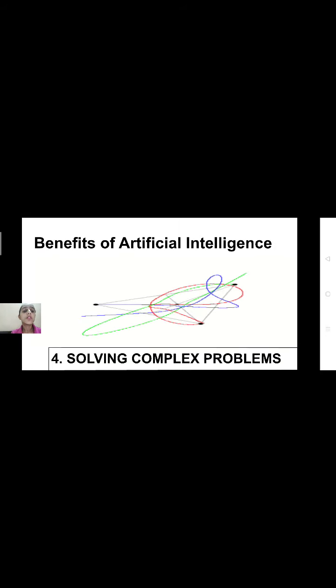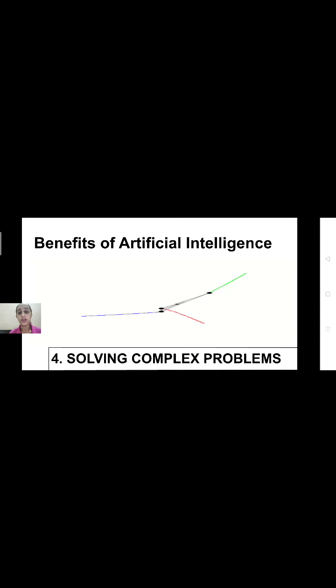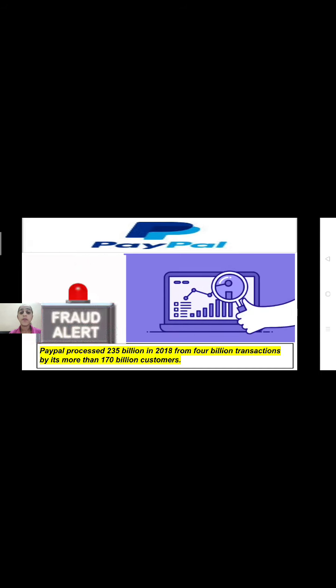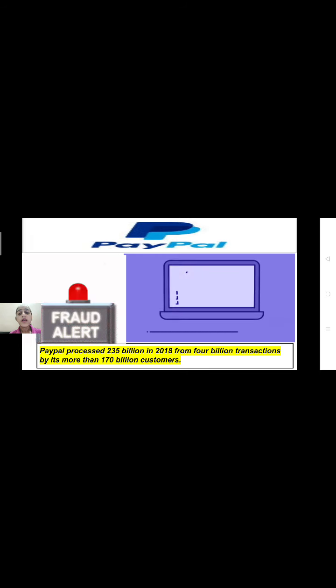The fourth and most important benefit of artificial intelligence is complex problem solving. AI is mainly used in medical diagnosis and weather forecasting — very complex fields that are solved more easily with AI. For example, PayPal processed about 235 billion dollars in 2018 from 4 billion transactions by more than 170 million customers, and thanks to deep learning, PayPal is able to detect frauds made during transactions.